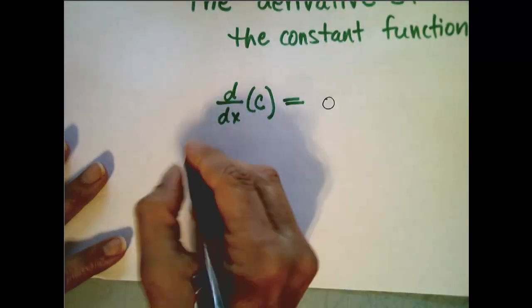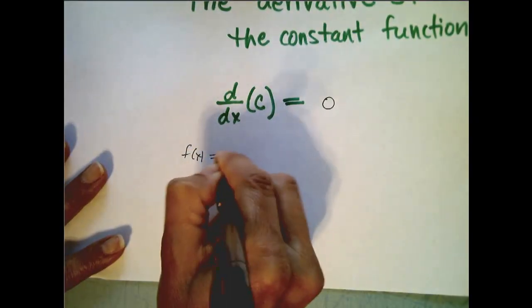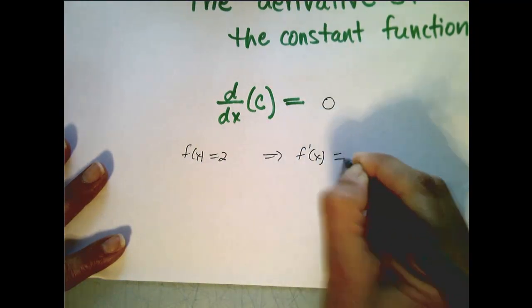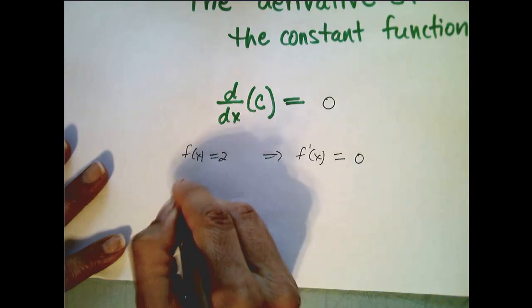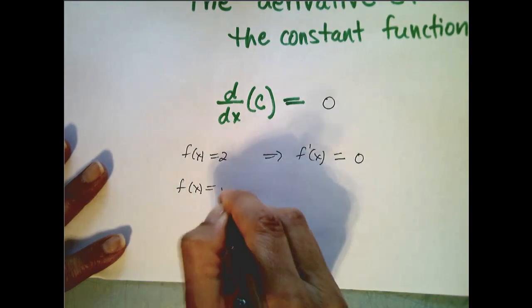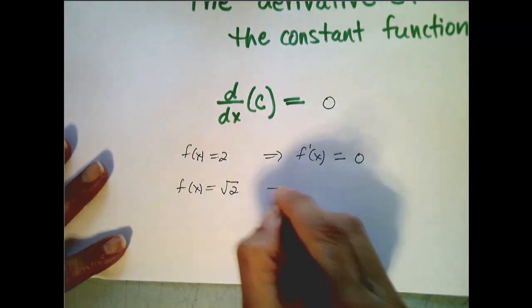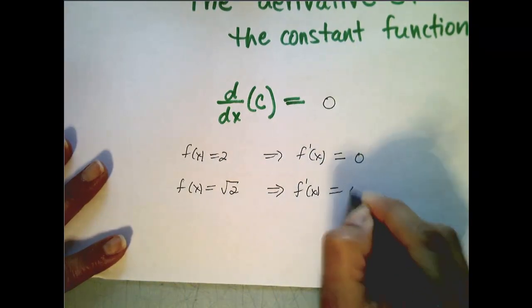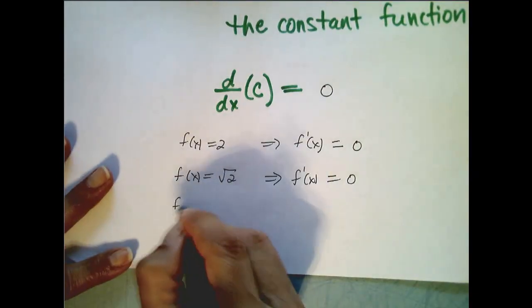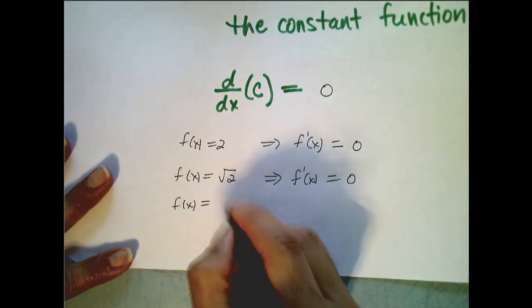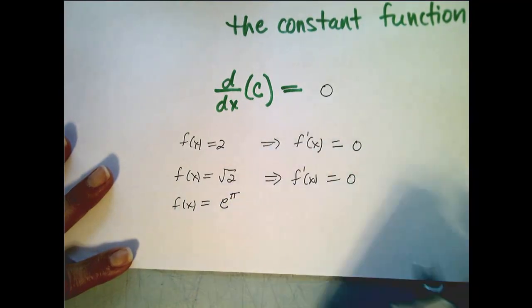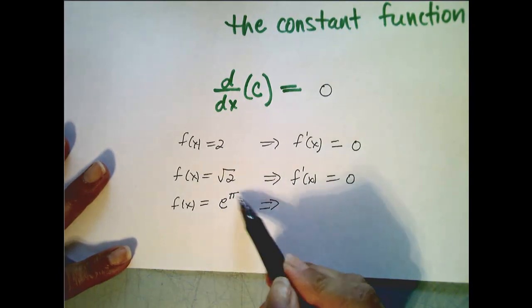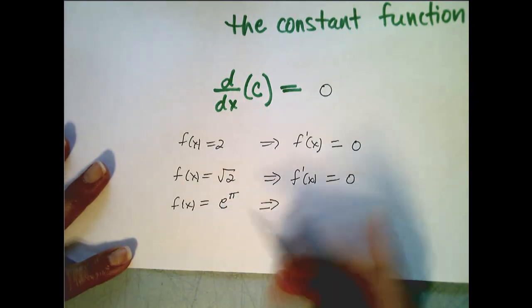Now, if I said f of x equals 2, what's the derivative? You would say, well that's a constant, so that derivative is 0. If I were to say f of x equals the square root of 2, you would say the square root of 2 is also just a constant, it's also 0. What if I said find the derivative of e to the pi? Here you might pause, but remember, e is a constant and pi is a constant, so e to the pi is a constant, and its derivative is also 0.